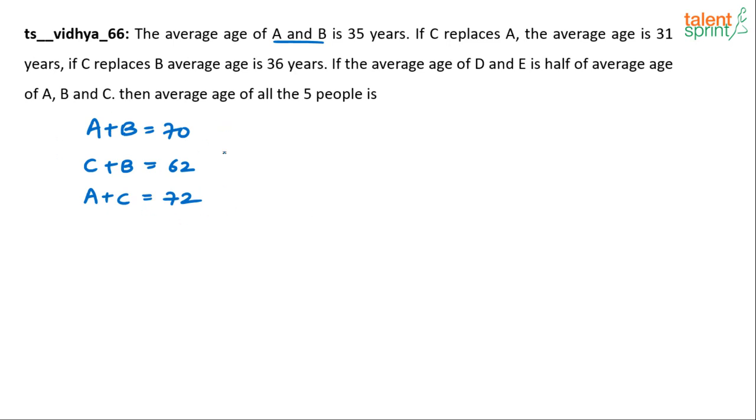Now if I look at all these three equations together, add up what happens? We have got two B's, two A's and two C's. So I'll have two times of A plus B plus C equals to the sum of these 70, 70, 140 plus 60, 200, 200 plus 4, 204. Meaning A plus B plus C is 102. The sum of A, B, C, the sum of the ages of A, B, C is 102.